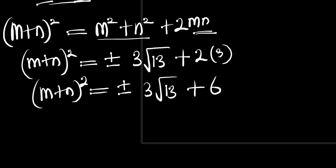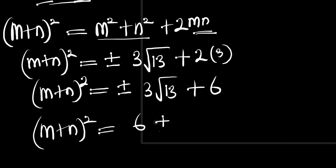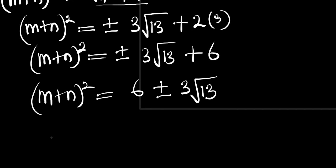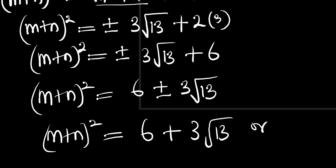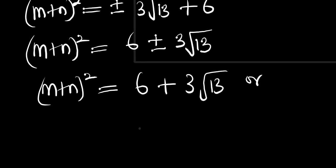So (m + n)² equals plus or minus 3 root 13 plus 6. Rearranging, (m + n)² equals 6 plus or minus 3 root 13. This gives us two cases: 6 plus 3 root 13, or 6 minus 3 root 13.